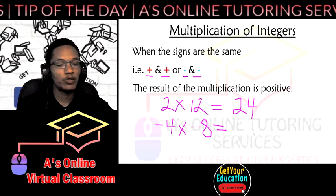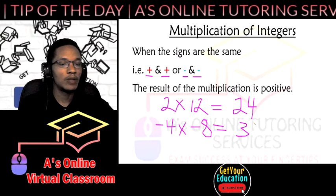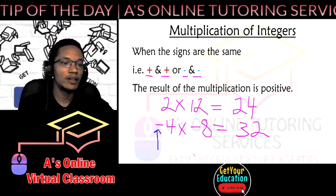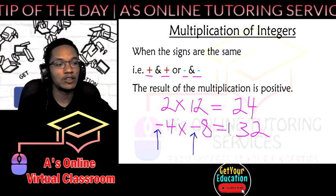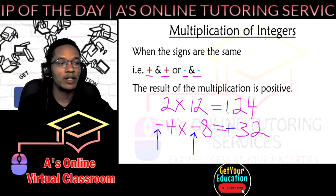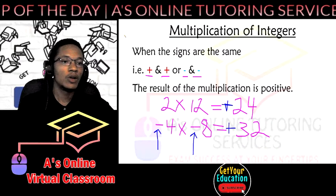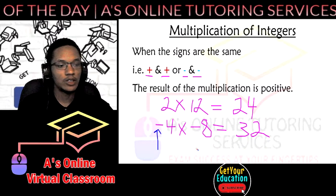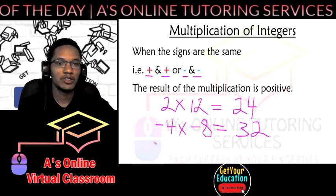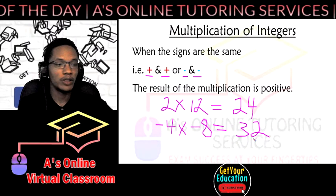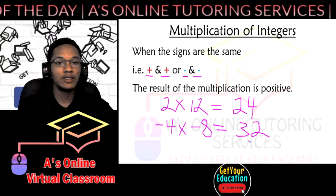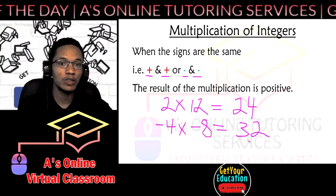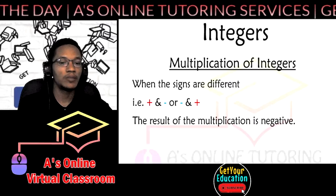8 multiplied by 4 is 32, and because the two signs are negative signs here and here, then the answer is going to be positive. And as we saw in previous videos, once a number is positive most times we don't write the sign, you just see the number by itself. So the answer is 24 on top and 32 below.